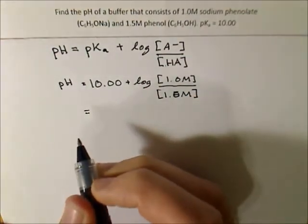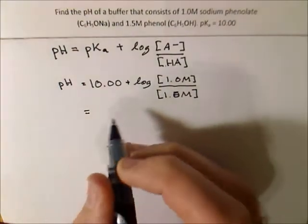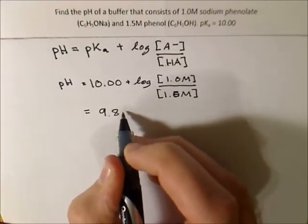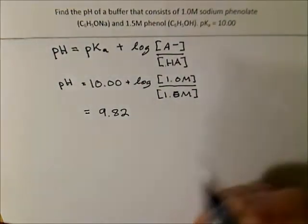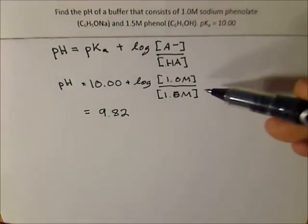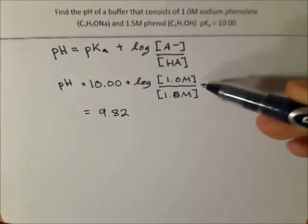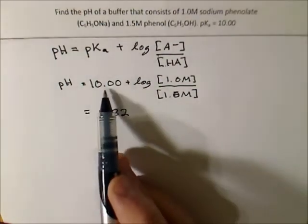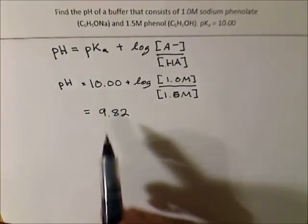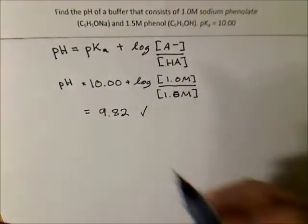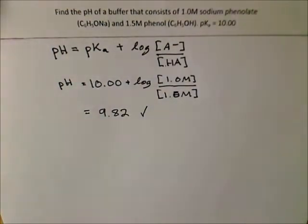So, adding those together, we should get 9.82 is the pH. And we can see here that we had more acid than we did base, so the pH should be less than the pKa, which is just 10. And that checks out. Okay, so that's a really simple example.